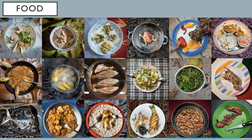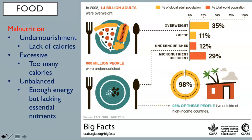There are over 7 billion people in the world that seek daily to nourish themselves. How people eat varies greatly by region and for different reasons, and the quality of their nourishment also varies greatly. Malnutrition is an umbrella term for bad nutrition. It can include undernourishment or the lack of calories, excessive nourishment or too many calories, and unbalanced nutrition — a diet that contains enough energy but lacks essential nutrients. Billions of people are excessively nourished.